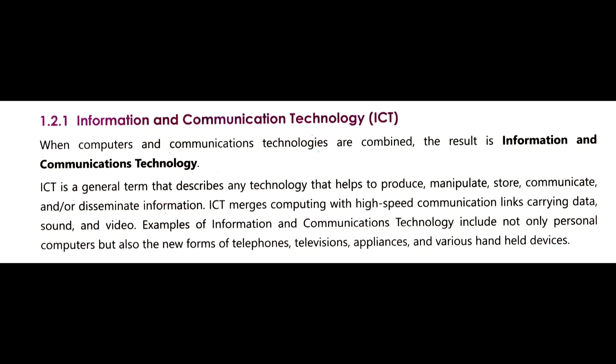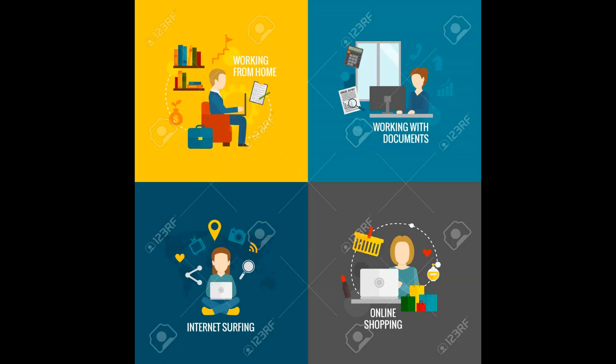Now we are going to see the major difference between Information and Communication Technology and Information Technology. Information and Communication Technology is also referred to as ICT. In ICT, we produce, manipulate, and store information for high-speed communication with the help of electromagnetic devices and computers, in which information can be carried from one source to a destination.